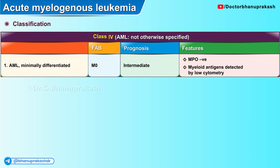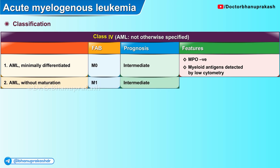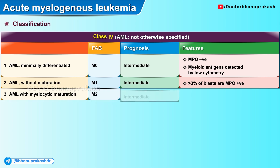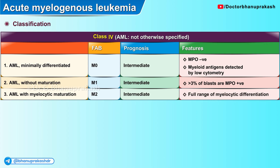All variants of class 4 tend to have an intermediate type of prognosis. The second variant is AML without maturation, classified under M1 of the FAB system, showing more than 3% of blast cells which are myeloperoxidase positive. The third variant is acute myelogenous leukemia with myelocytic maturation, classified under M2, showing a full range of myelocytic differentiation.